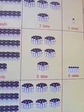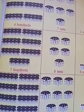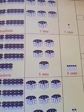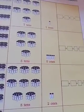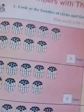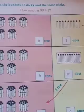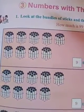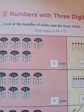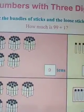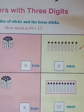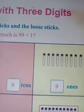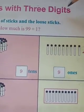Hello children, now second class Mathematics. What is our chapter? Third chapter. What is our third chapter? Numbers with three digits. Say numbers spelling children: N-U-M-B-E-R-S numbers, W-I-T-H with, T-H-R-E-E three, D-I-G-I-T-S digits. Numbers with three digits.